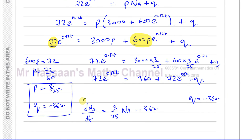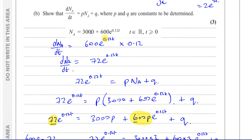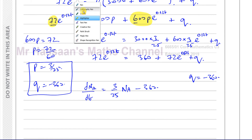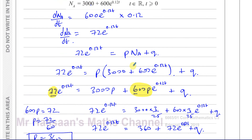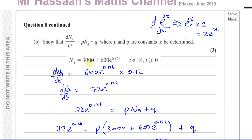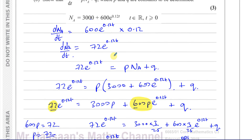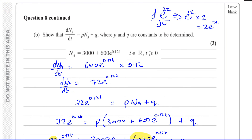So we've worked out p and q. We can now write dNA/dt equals 3/25 times NA minus 360. Instead of p we write 3/25, and instead of q we write −360. That's the answer. They want us to express the derivative in terms of NA, which is what we've done here. That concludes part B.